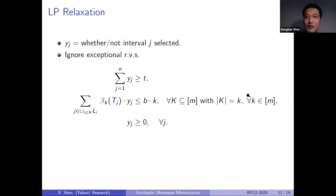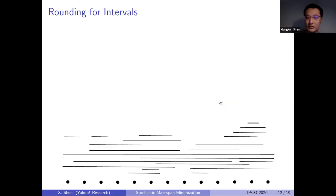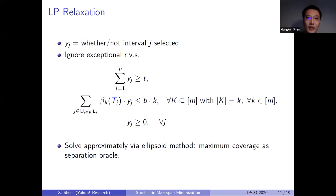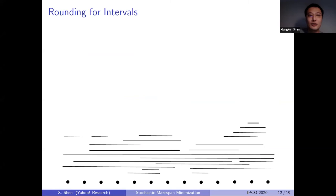Note that we have an exponential number of constraints here, so we need a separation oracle to solve it. We call a maximum coverage subproblem as a separation oracle. We cannot solve this LP optimally, but there is only a constant factor loss in this solving step. I also want to mention that this LP is just a feasibility LP: we are guessing the optimal value and only want to check if the LP returns a feasible solution, or alternatively get a certificate to show it is infeasible.